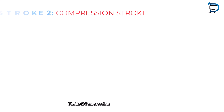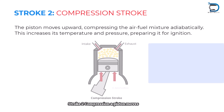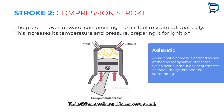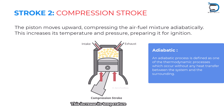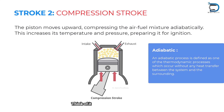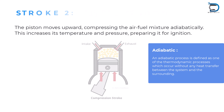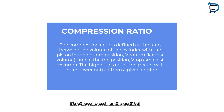Stroke 2 — Compression: The piston moves upward, compressing the air-fuel mixture adiabatically. This increases its temperature and pressure, preparing it for ignition. Think of it as squeezing a spring to store energy. Here, the compression ratio, a critical design parameter, determines engine efficiency.